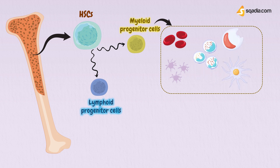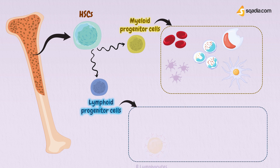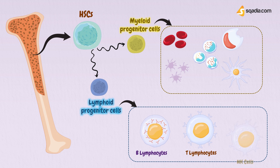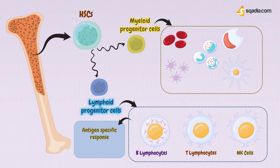Lymphoid progenitor cells give rise to B lymphocytes, T lymphocytes, and natural killer cells. B and T lymphocytes are members of the adaptive immune system and generate a refined antigen-specific immune response, and they also give rise to immune memory.